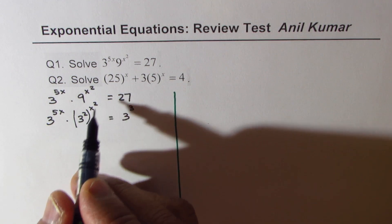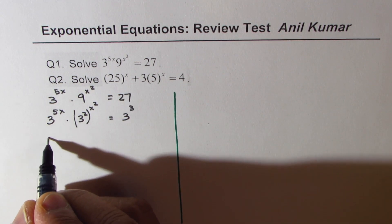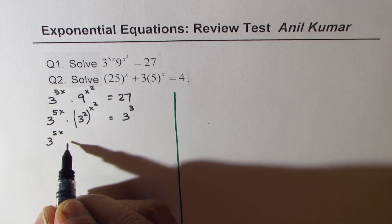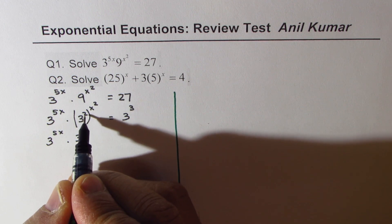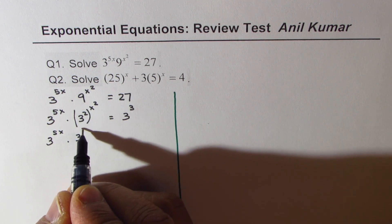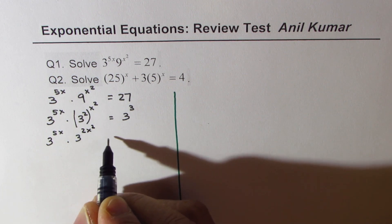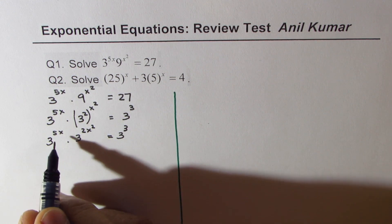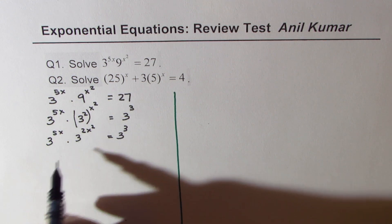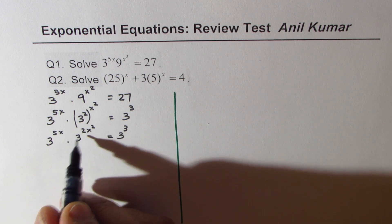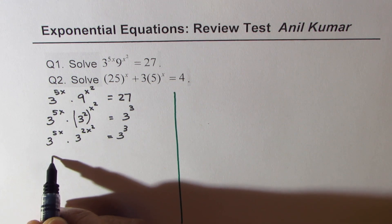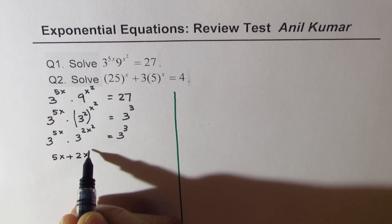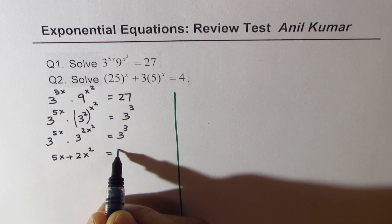Now we will apply the laws of exponents. We get 3 to the power of 5x times 3 to the power of 2x squared equals 3 to the power of 3. Since the bases are the same, we can add the exponents on the left side, giving us 5x plus 2x squared equals 3.